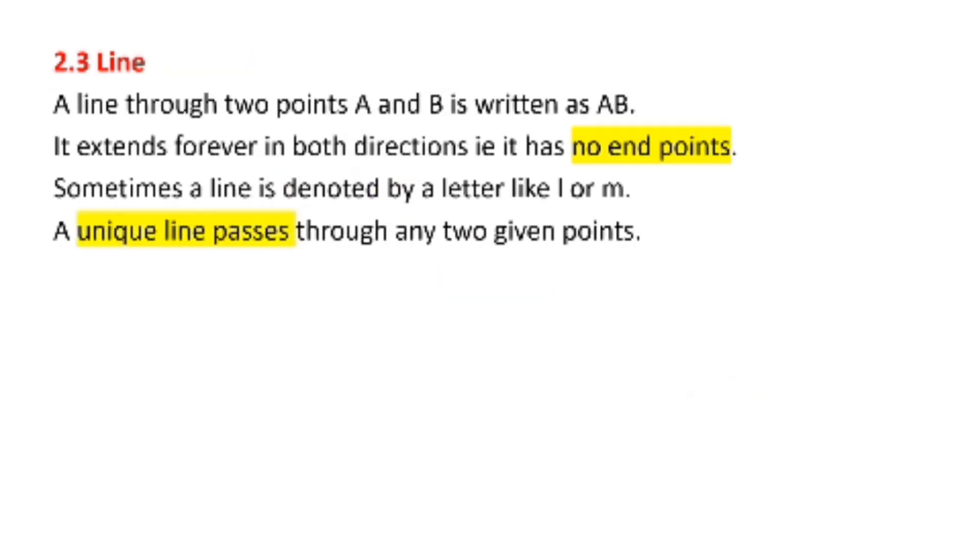The next one is line. A line through two points A and B is written as AB. So now we need to draw a line on top of this AB. So it would look somewhat like this with a double arrow.